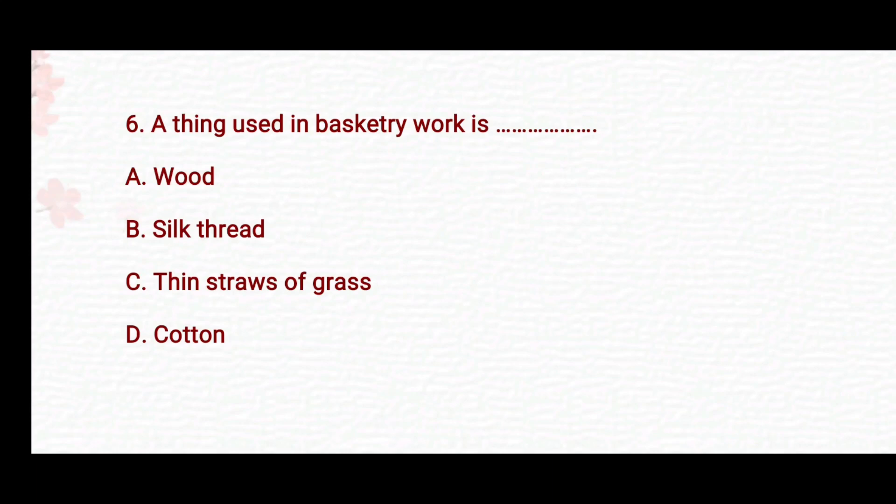Next: A thing used in basketry work is? Option A: Wood. Option B: Silk Thread. Option C: Thin Straws of Grass. Option D: Cotton.